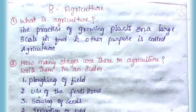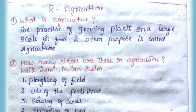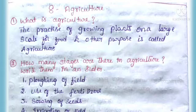EBS 8th lesson: Agriculture — Question and Answer. First question: What is agriculture? Answer: The practice of growing plants on a large scale for food or other purposes is called agriculture. Second question: How many stages are there in agriculture? Write them in order.